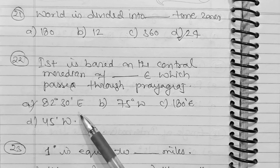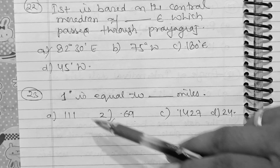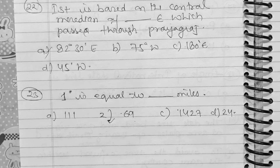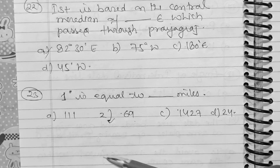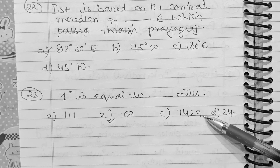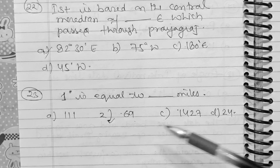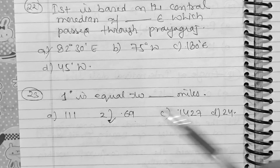Question 23: 1 degree is equal to how many miles? Option A: 111 km. Option B: 69 miles. Option C: 1,427 miles. Option D: 24 miles. The correct answer is option B, 69 miles.